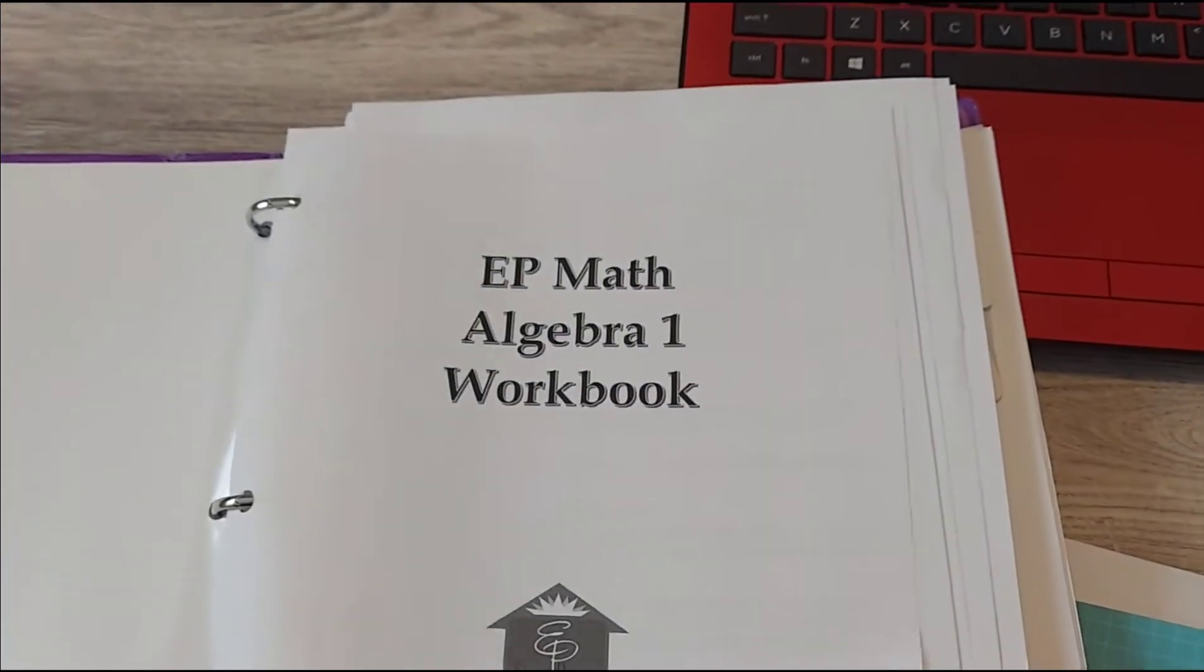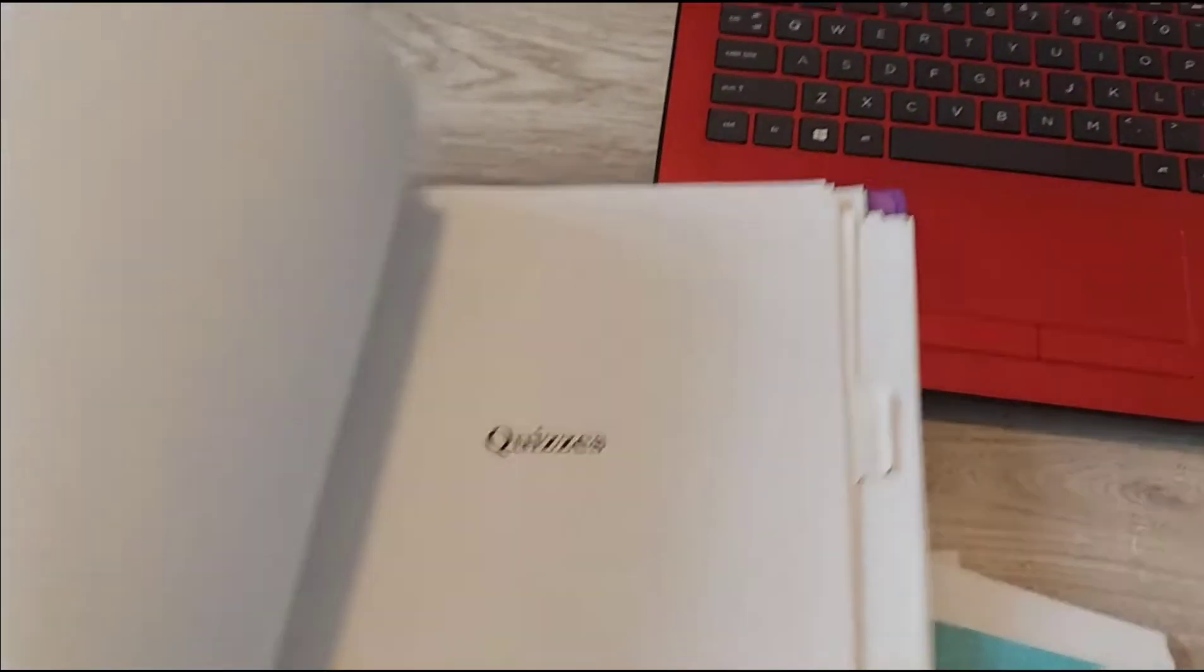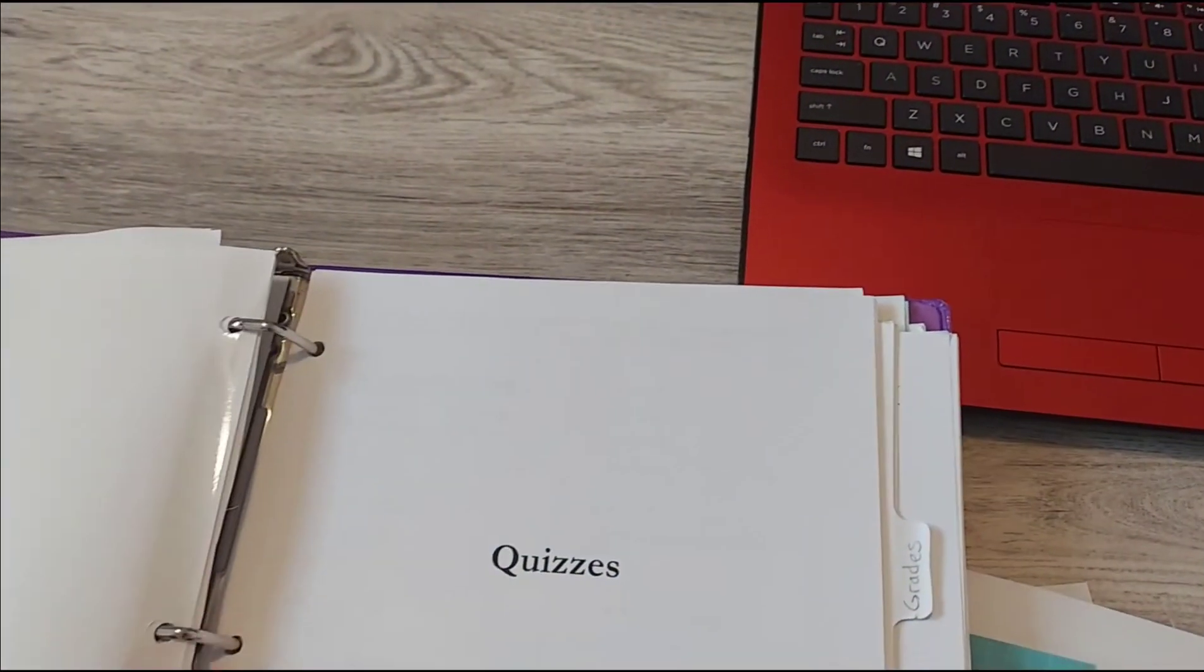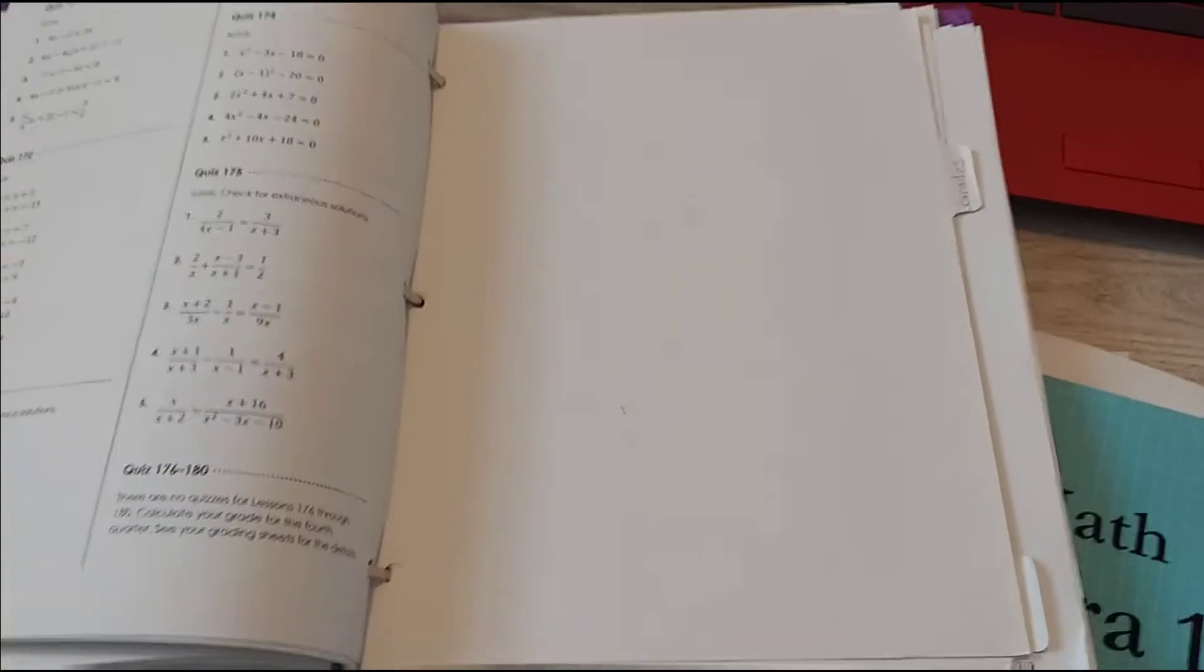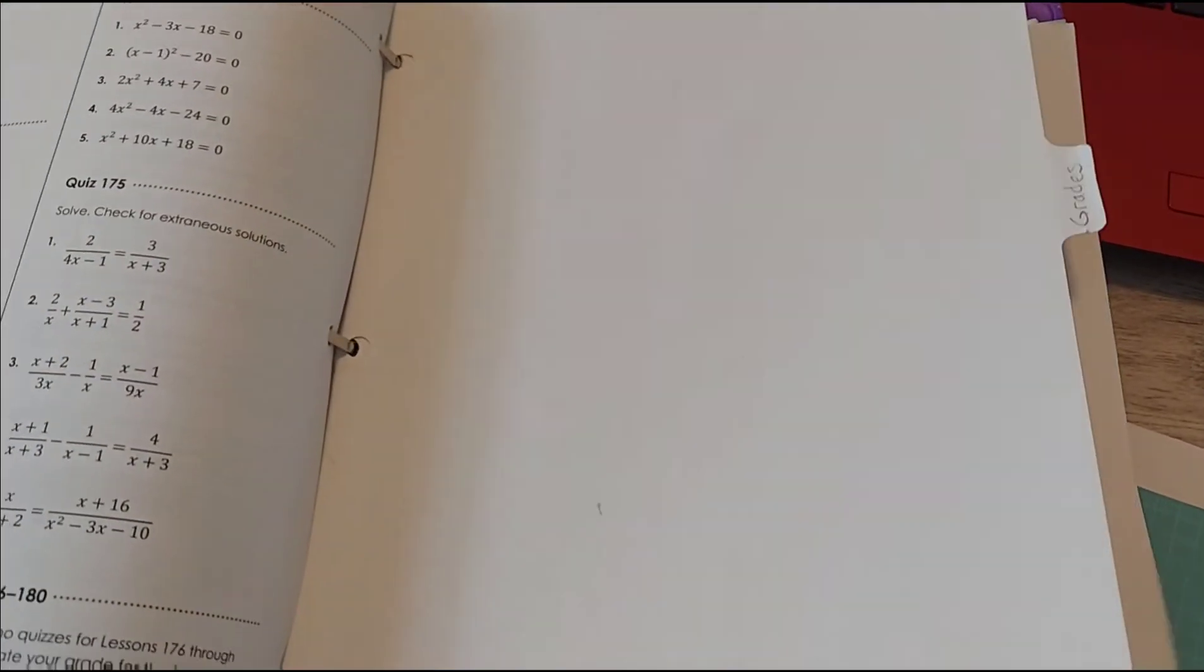First tab is for the lessons. That's in here and then the next tab I have for the quizzes. The last tab that I have here is for everything that was found in the back of the book.